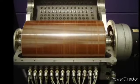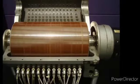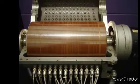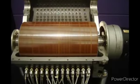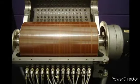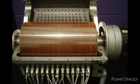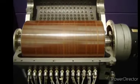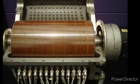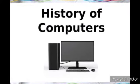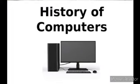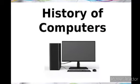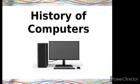Next is ENIAC. ENIAC was invented by John Mauchly and J. Presper Eckert. The full form of ENIAC is Electronic Numerical Integrator and Computer — E for Electronic, N for Numerical, I for Integrator, A for And, and C for Computer. ENIAC used decimal digits instead of binary digits. It was the first high-speed electronic digital computer and was in use from 1946 to 1955.